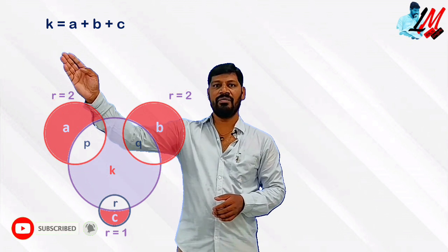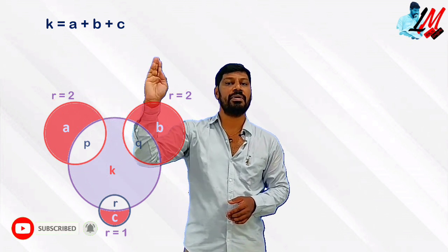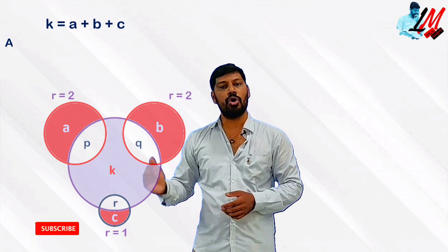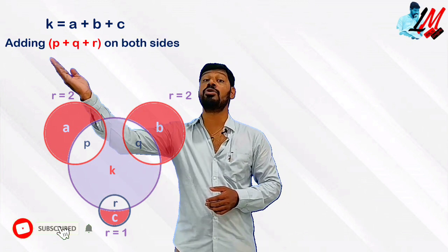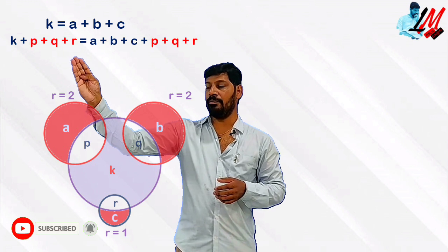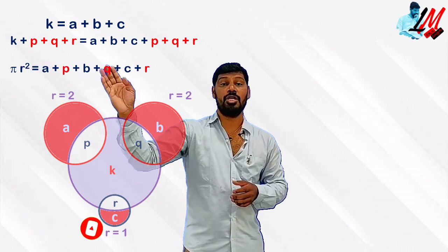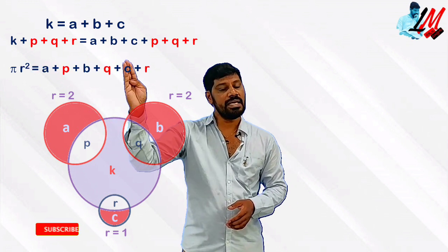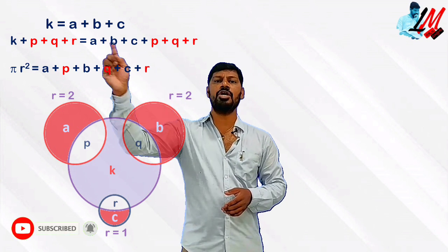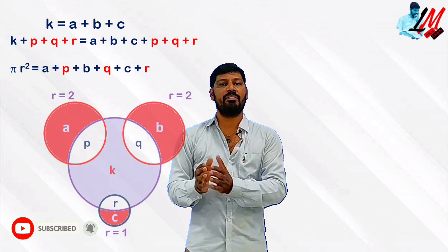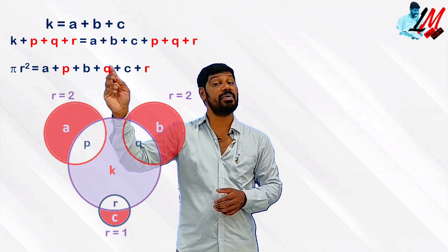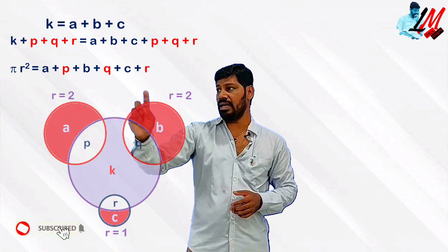Since K equals A plus B plus C, adding P, Q, R to both sides gives K plus P plus Q plus R equals A plus B plus C plus P plus Q plus R. Rearranging all six terms in order, we get A plus P plus B plus Q plus C plus R.